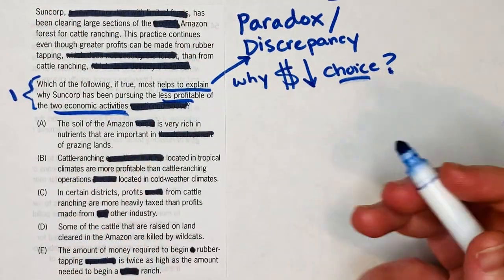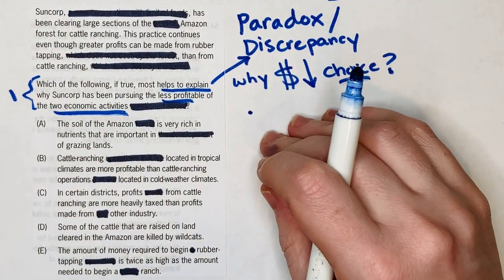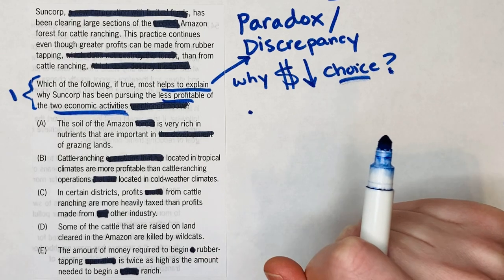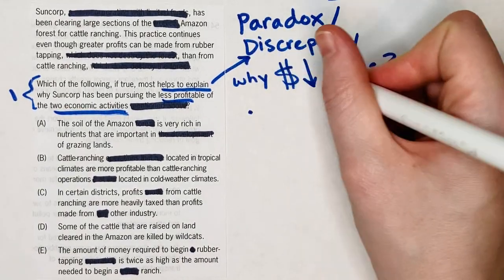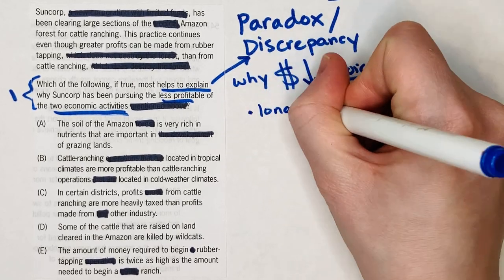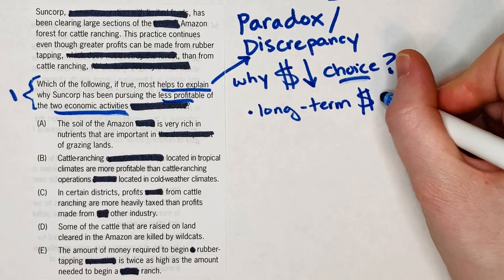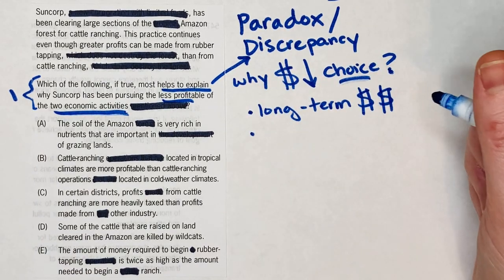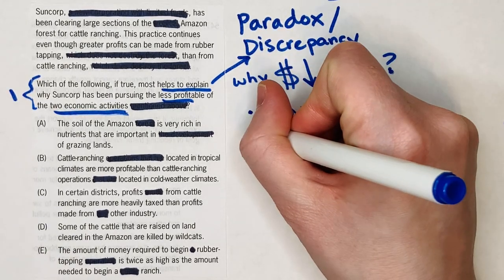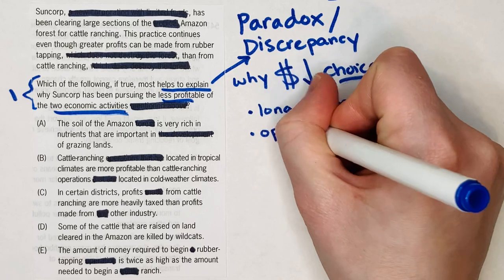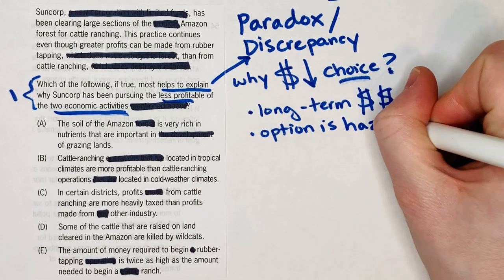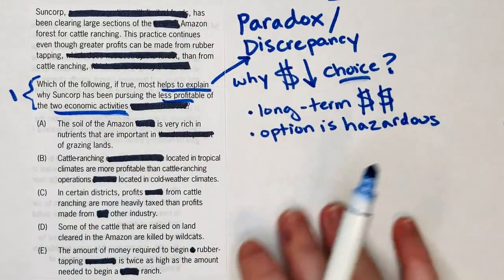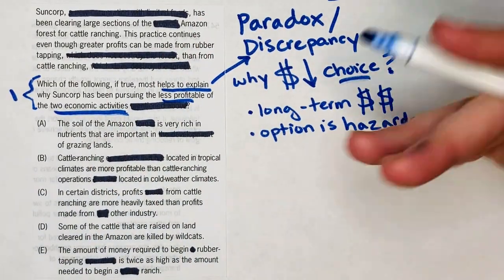If I was thinking about this without even looking at the question stem, two things might come to mind. If you have two options and you're pursuing the less profitable one, there are probably only two reasons why you'd do that. Either it's maybe less profitable short term, but there are long-term profitability benefits — so maybe you'd get more money long term. Or there's something wrong with the more profitable option: maybe it's hazardous, dangerous, people get injured, there's loss of life, etc. It's nice to brainstorm a little bit before getting into the specifics.